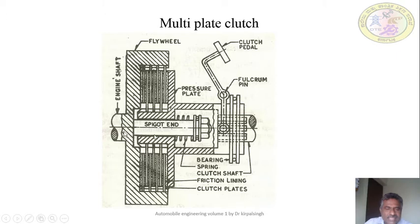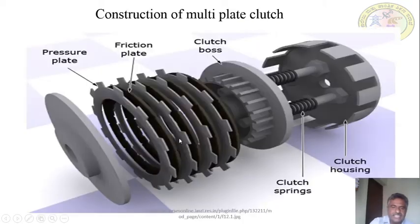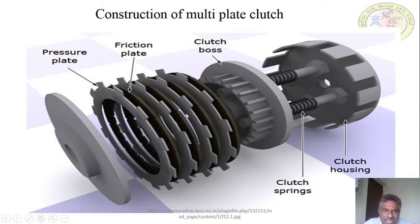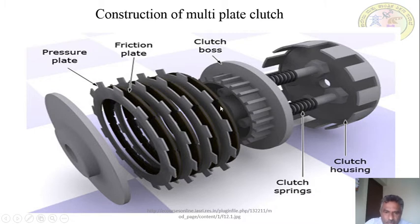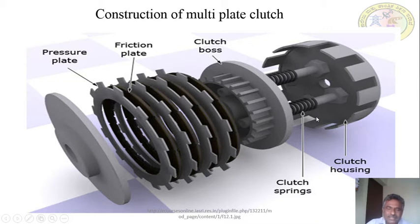Looking at the rendered sketch: the clutch housing contains clutch springs which provide the required axial force. There is a clutch boss. Friction plates and pressure plates are arranged alternately forming the clutch pack. The clutch housing is located on the engine output shaft. One set of plates has external projections that sit in the housing slots, while the other set has internal splines that sit on the hub or boss. The whole assembly is held together by the clutch springs.